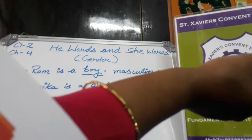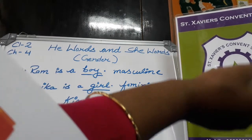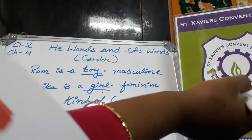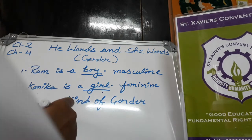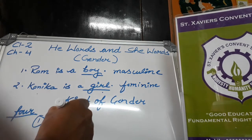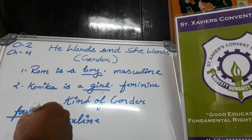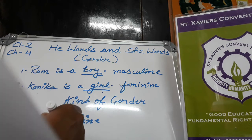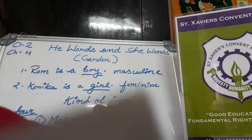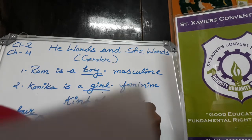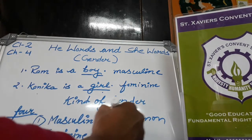A noun could be common gender also. First kind of gender is masculine gender, second is feminine gender, third is common gender, and fourth is neuter gender.